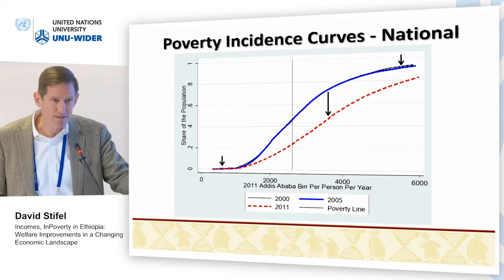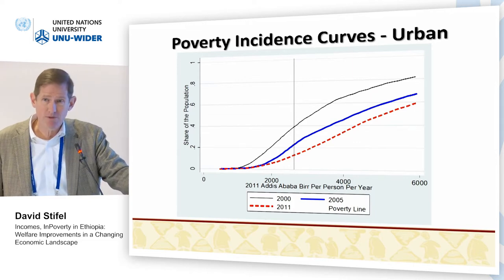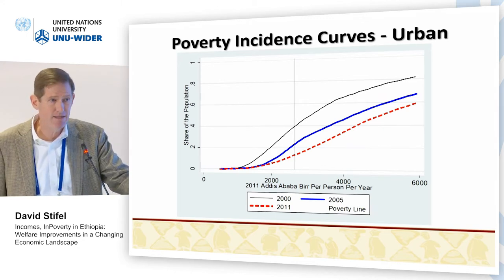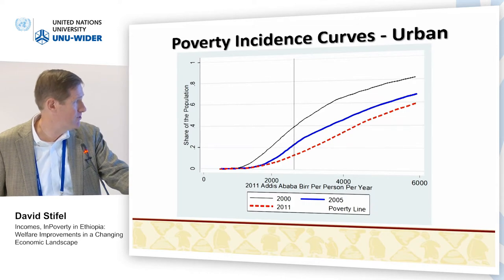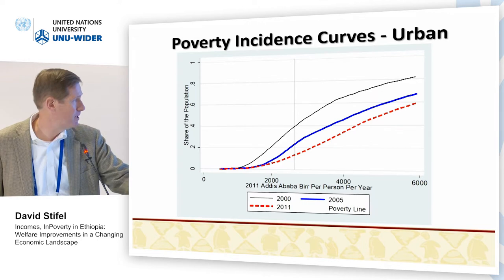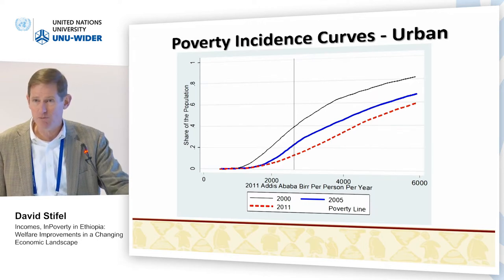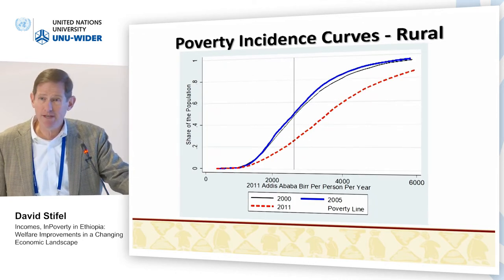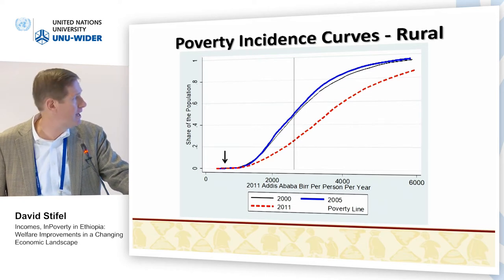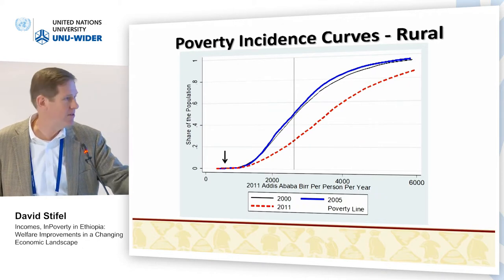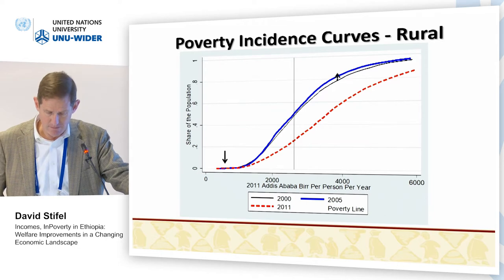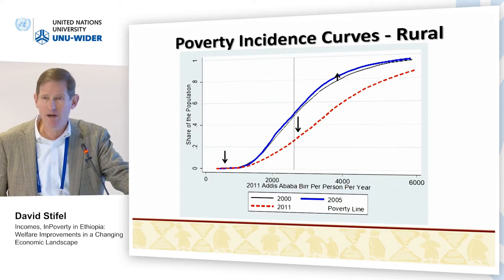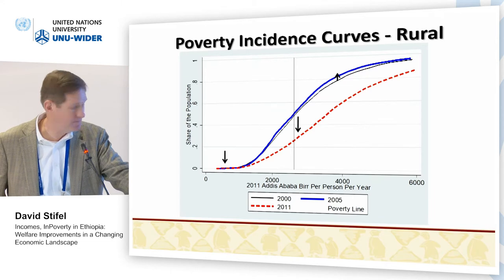This is getting at what Martin Ravallion mentioned yesterday — while we talk about the success in Ethiopia, the poorest five percent tend to be stuck there. In urban areas we see a considerable decline in poverty almost across the board between 2000, 2005, and 2011, though not as much improvement at the lower end of the distribution. For rural areas, the story mirrors what we see at the national level given the predominance of the rural population: a very slight increase between 2000 and 2005, then a large decrease between 2005 and 2011.